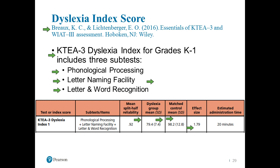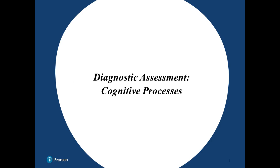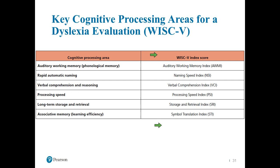The next part of the assessment process looks at cognitive assessment — looking at those processes that are super important in determining the causes and correlates. I have listed the WISC-V here, though I absolutely agree there are other assessments out there: the NEPSY-2, the WJ, the DAS. You want to make sure you account for auditory working memory, rapid automatic naming, verbal comprehension and reasoning, processing speed, that memory component, and associative memory. The WISC-V has measures for each of these areas of processing.